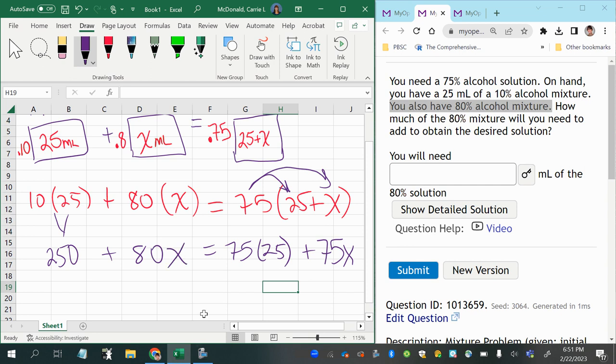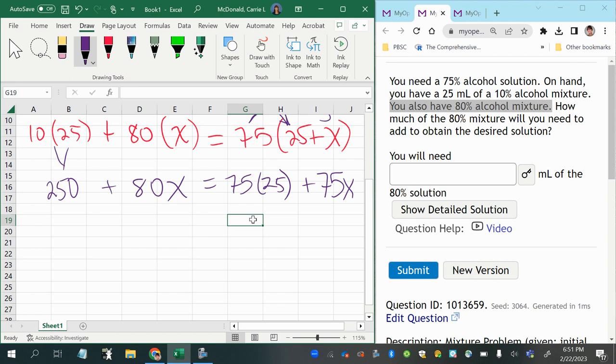And you continue simplifying. So I'm not sure what 75 times 25 is. In Excel, I can do it like this. Of course, you will not be allowed to use Excel on your tests. For algebra, most likely you should have a scientific calculator. And so you can just multiply 75 times 25. So that gives me 1,875.